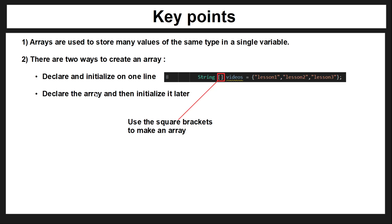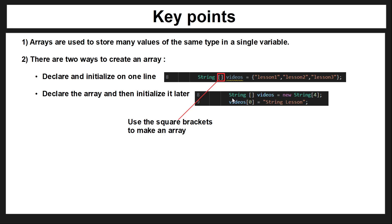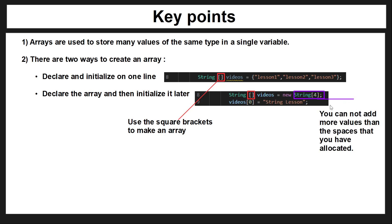You can also just declare the array and then initialize it later. We've got the same data type — string — and we use the same brackets to tell the computer it's an array, but here we're saying we want to create new space in memory and this space will store four values of string. Importantly, in both examples, once you add the space to the array you cannot add more values than the space you have allocated — you cannot increase the size of your array. The computer will not allow it.